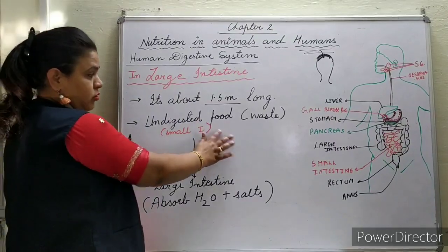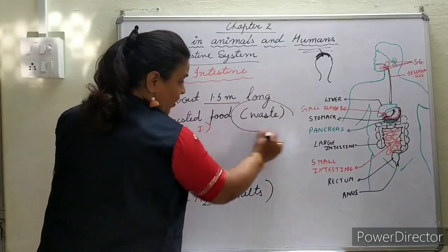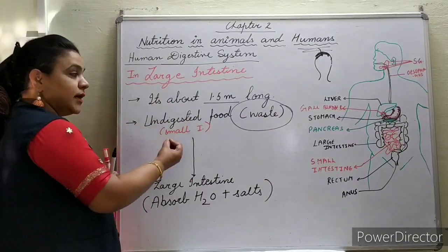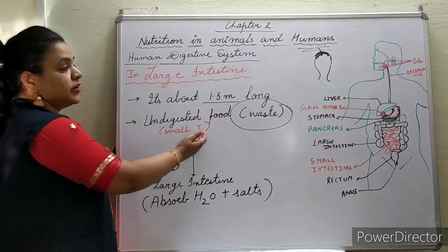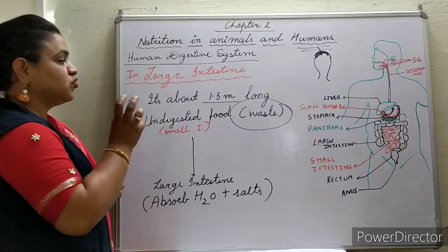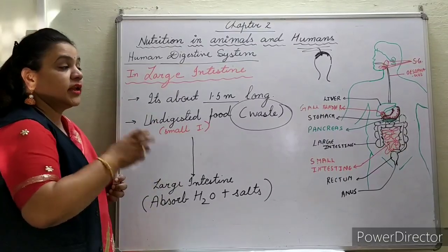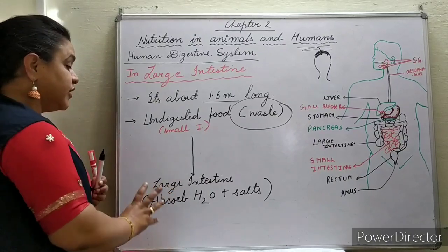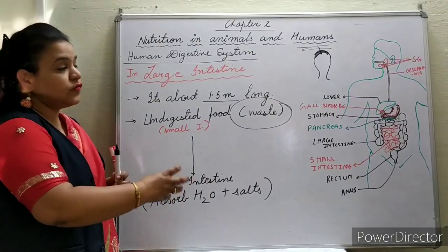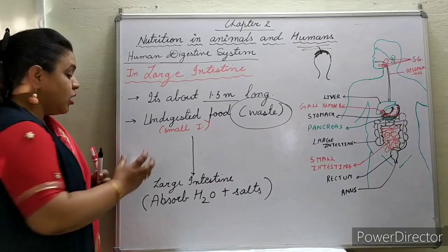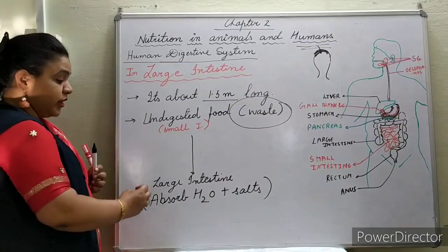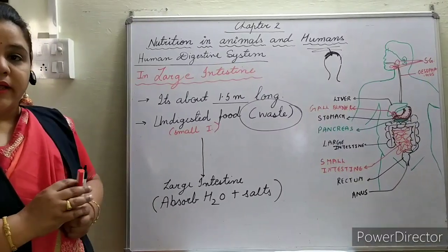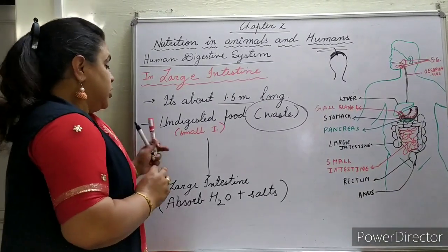Undigested food — also known as waste — comes from the small intestine into the large intestine. The large intestine absorbs water and certain salts from this undigested food.